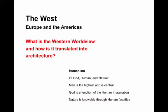If God, human, and nature — and human or man is the highest and is central — then God is a function of the human imagination, and nature is knowable and controllable through human faculties. What's a technical term we have for our ability to know and control nature? Science and technology. Right now we can take a single photon and play with it — stop its spin. The degree to which we can know and control nature is amazing.